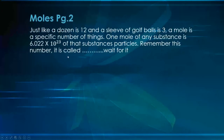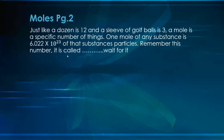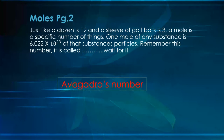Moles — just like a dozen is 12 and a sleeve of golf balls is 3, a mole is a specific number of things. Don't be overwhelmed by the fact that it's a ginormous number. One mole of any substance is 6.022 times 10 to the 23rd of that substance's particles. Imagine 6.022 and then 23 zeros after it — it's a really, really big number. This is the number we need to worry about; it's very important for what we're doing today. We have to remember this number and it's got a special name: Avogadro's number.